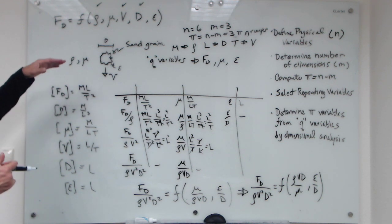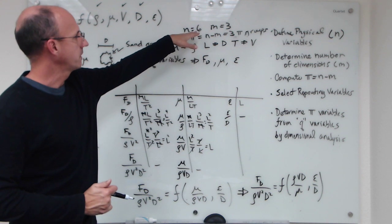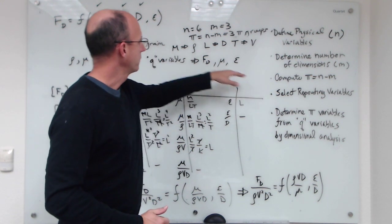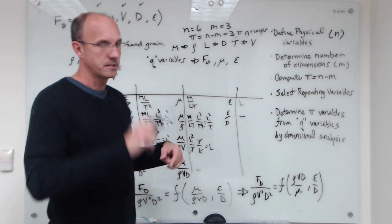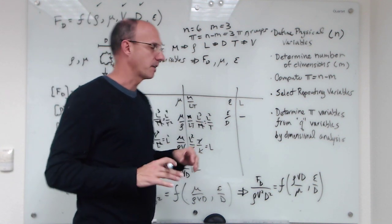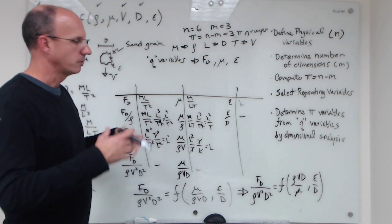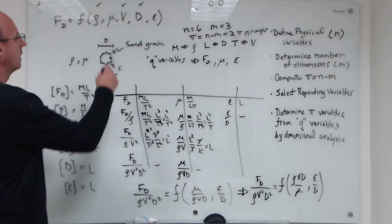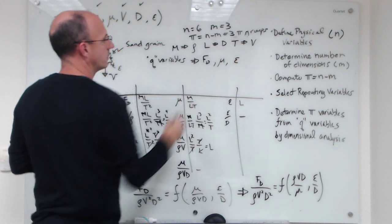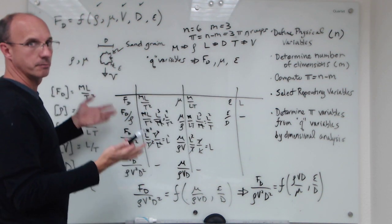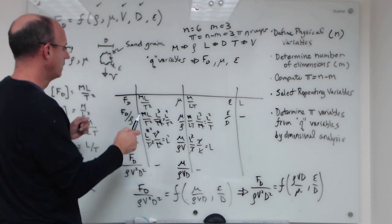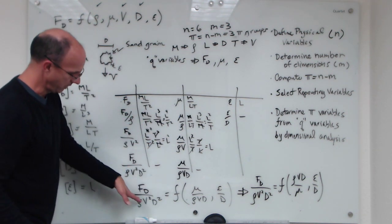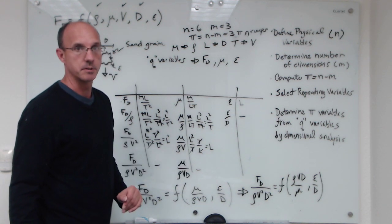To recap the step-by-step dimensional analysis method: you identify the total number of physical variables, identify the number of dimensions, compute the number of pi groups, and select repeating variables — all the same as the textbook method. What's different is that instead of solving for exponents algebraically, you remove one dimension at a time iteratively. The remaining variables after selecting repeating variables become your so-called q variables, and the step-by-step process leads you to one dimensionless number as a function of the other dimensionless numbers.